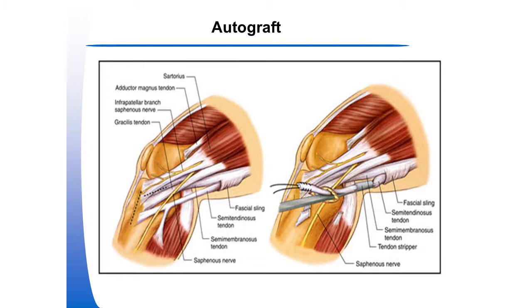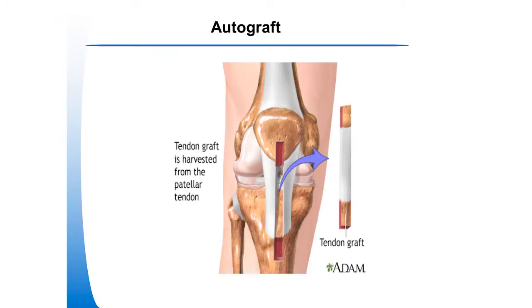They also make revisions a lot easier. My preference is the hamstring because I think it's a stronger graft, it's a little easier to harvest, requires a smaller incision, and you don't have problems with the kneecap. With the patella tendon, you're taking a big chunk of bone out, and studies have shown that anterior knee pain is more common, and even arthritis of the kneecap or fracture through the patella. But they're considered equal overall.